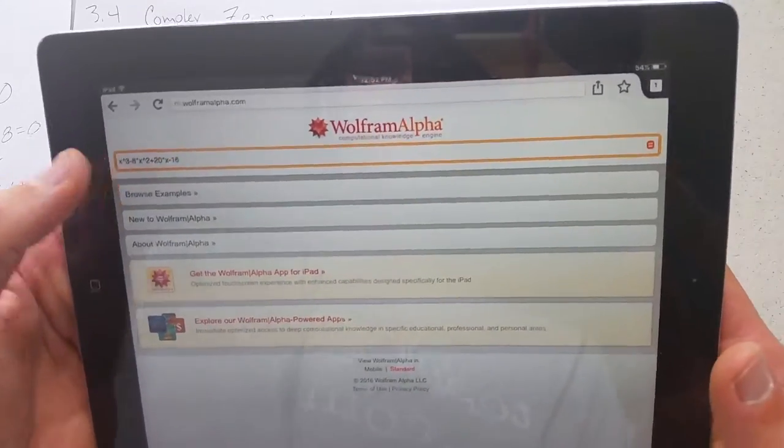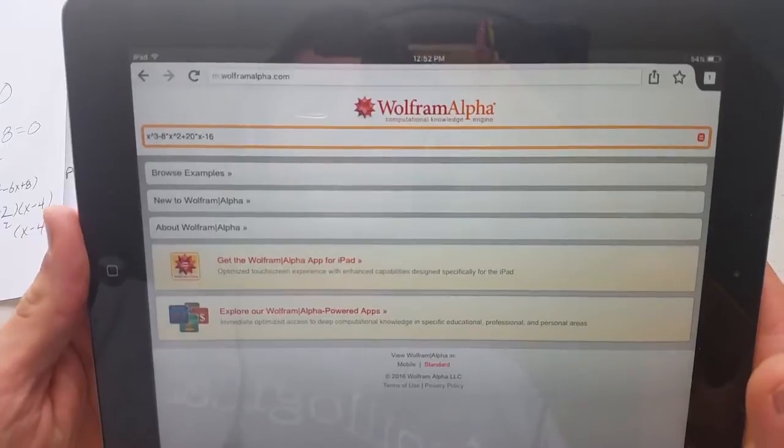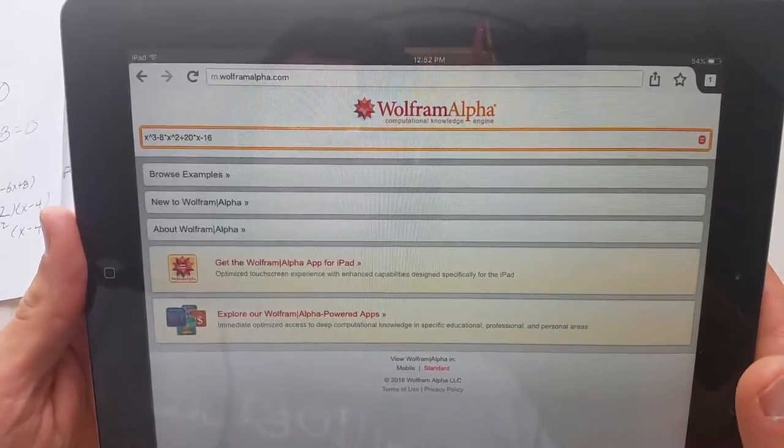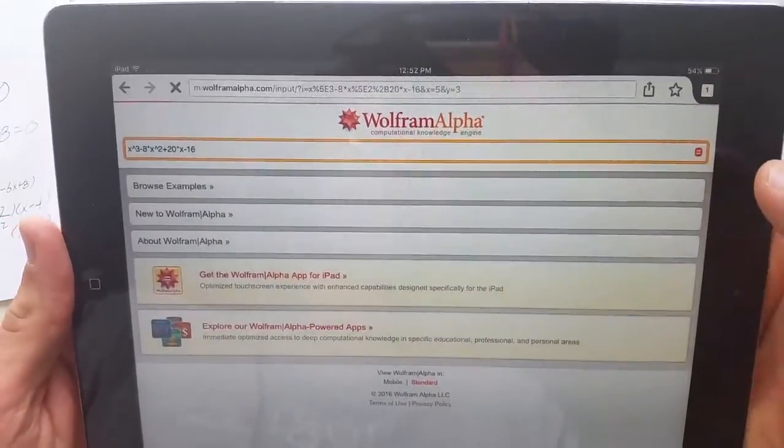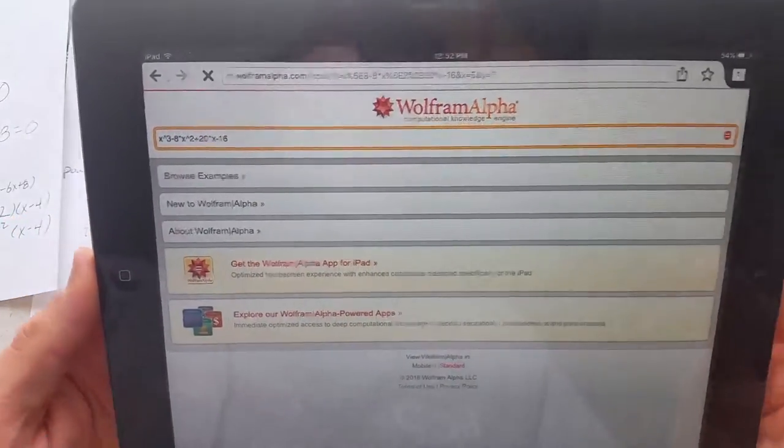Basically just type in whatever you want up here. I did the same polynomial x cubed minus 8x squared plus 20x minus 16. Hit this little button over here, takes a minute to think.